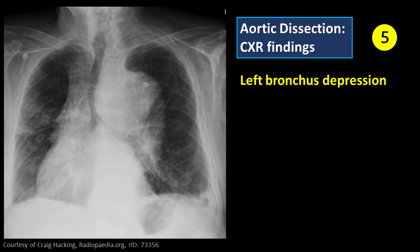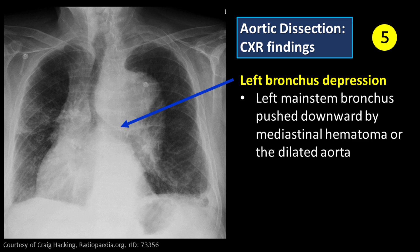Feature number 5: Left bronchus depression. The left main stem bronchus may be pushed downward by mediastinal hematoma or the dilated aorta.